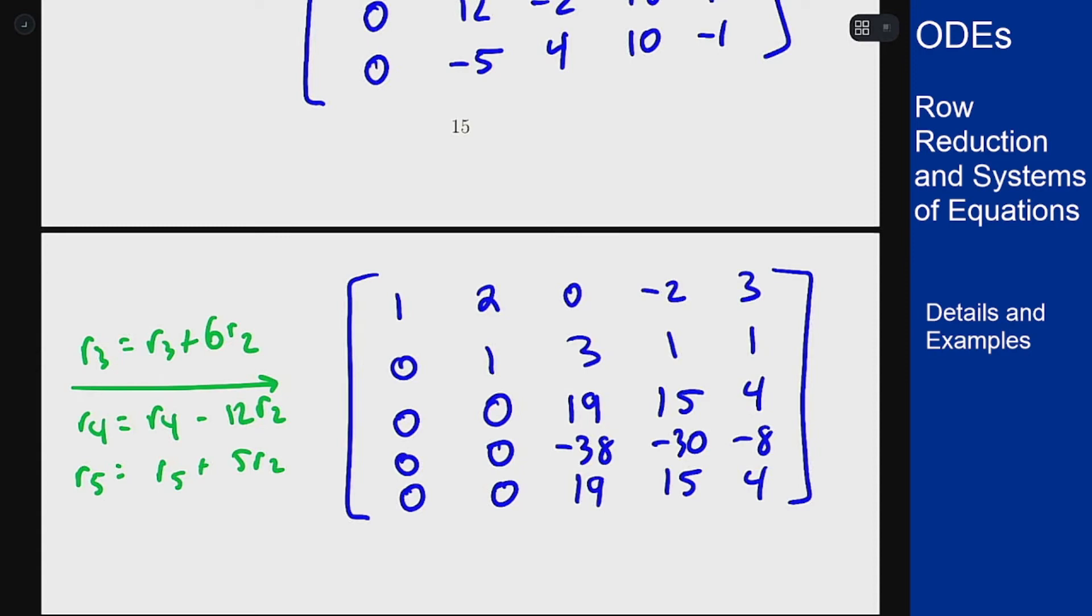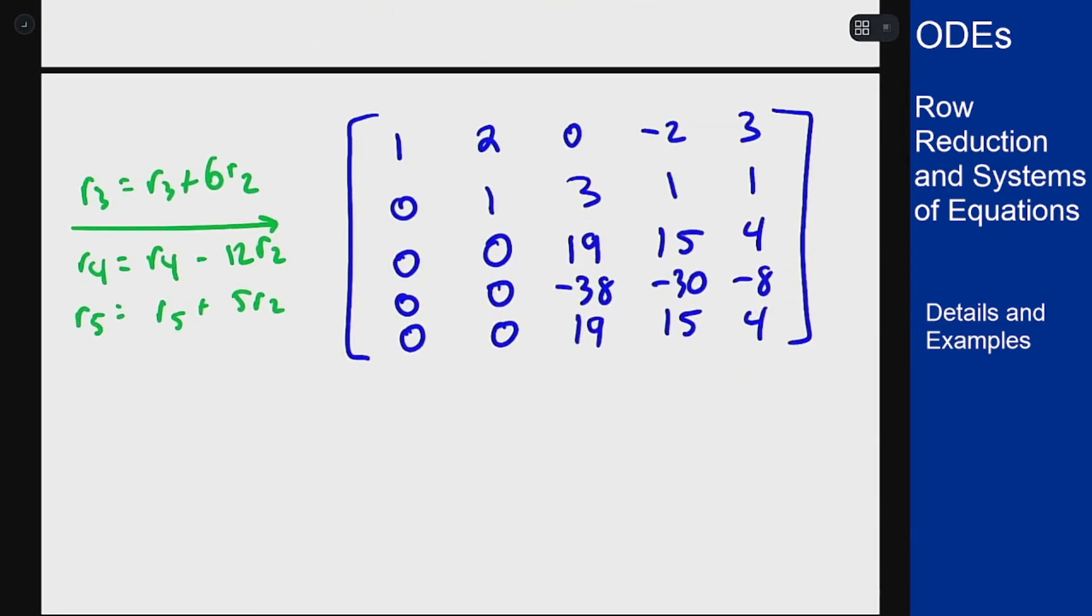Now the next step would ideally be to divide this by 19, meaning divide the entire row by 19 to get a 1 in that spot. However, I can shortcut this a little bit by recognizing the fact that at this point